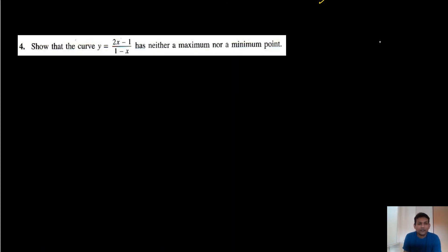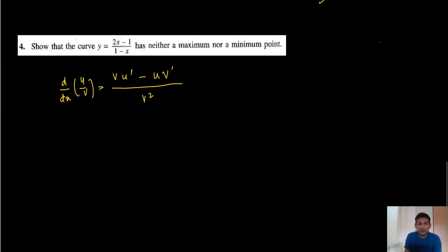For question 4, you need to apply the uv differentiation formula — the quotient rule. Differentiation of u/v: v is in the denominator squared, and it's v·du - u·dv over v². You can identify u and v from the equation and apply it to find the maximum or minimum. Thank you.